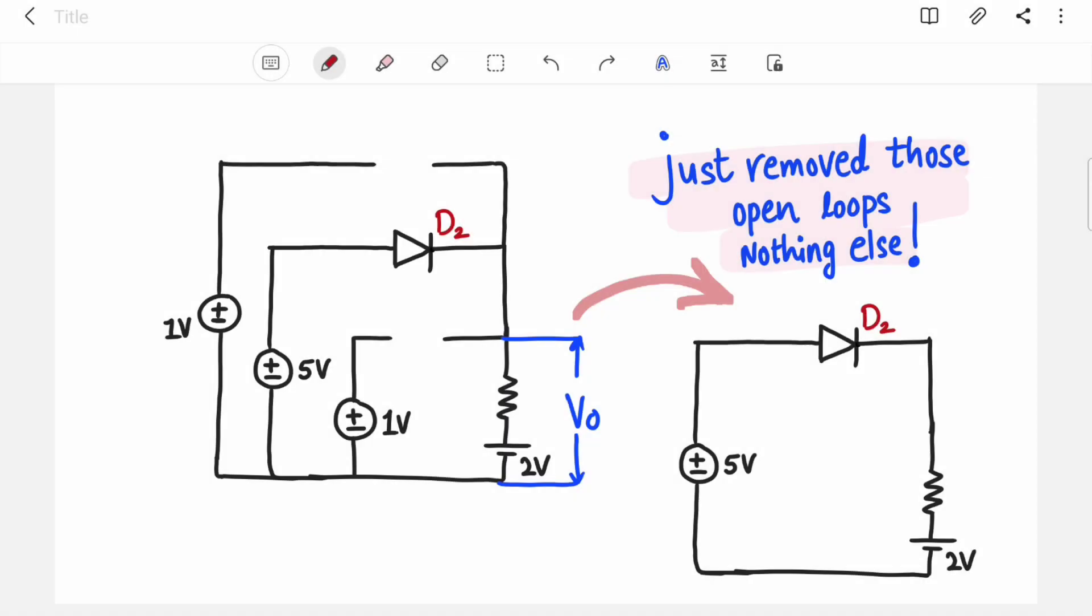So now we have to find out Vo. Now this Vo is connected between these two points. So many of you must be thinking it is nothing but 2 volt, but Vo is not 2 volt.